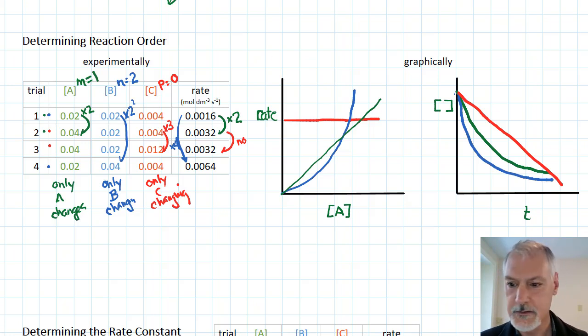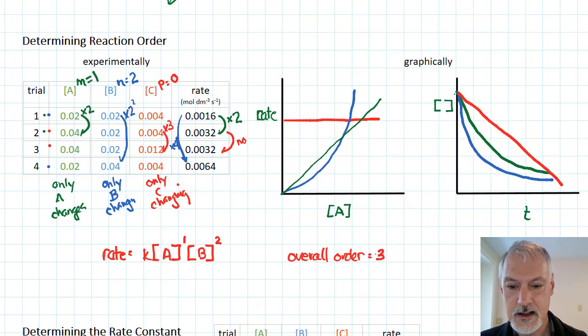Now we'll return to the rate law, and right now, write down what we know. So the rate of this particular reaction is some constant times the concentration of A to the exponent 1 times the concentration of B squared. And C does not affect the rate of the reaction. This has an overall reaction order of 3. I get that by adding together these two exponents.